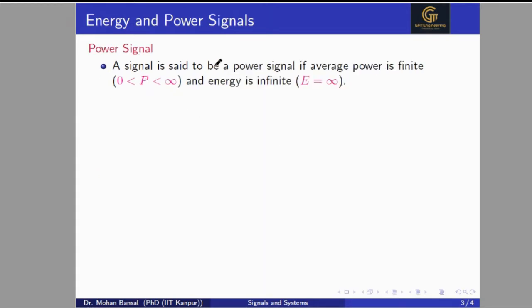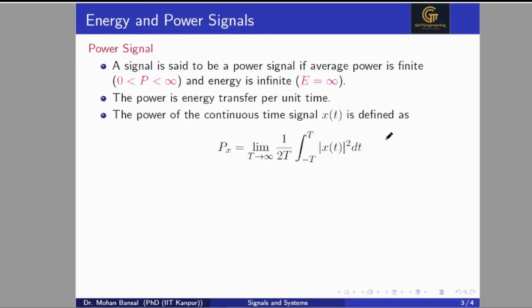Now, for the power signal: a signal is said to be a power signal if average power is finite and energy is infinite. Power can be computed using the formula: limit as T tends to infinity of 1 divided by 2T, times the integral of |x(t)|² dt with limits minus T to T. The 2T is the integration period from minus T to T, so T minus (minus T) equals 2T.